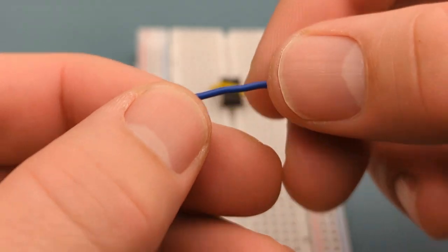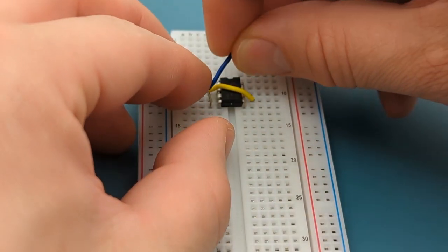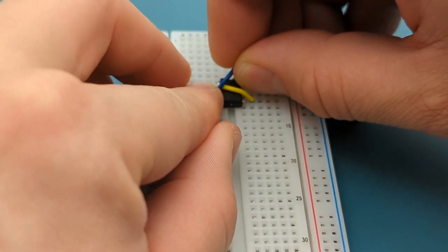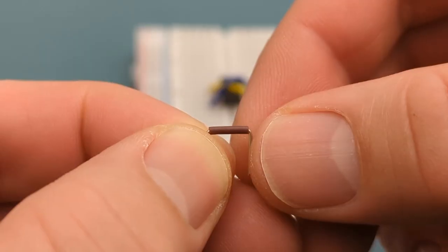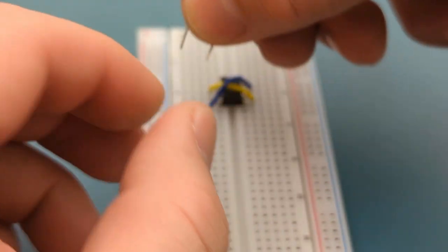Use a jumper wire to connect pin 4 or reset to pin 8 or VCC. A jumper wire connects pin 1 or ground to the negative rail.